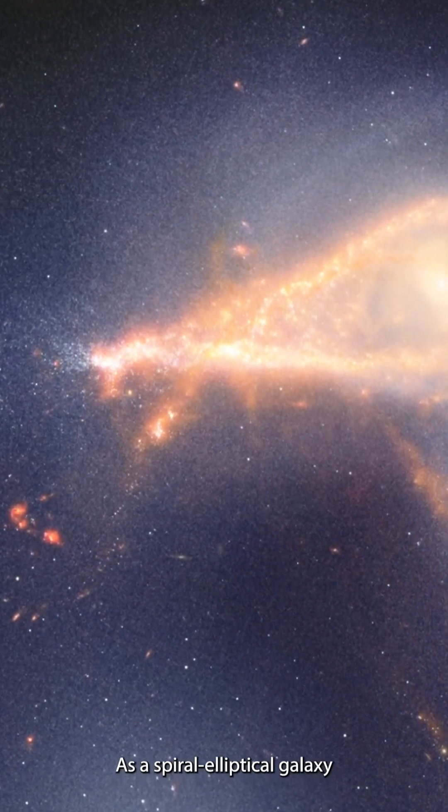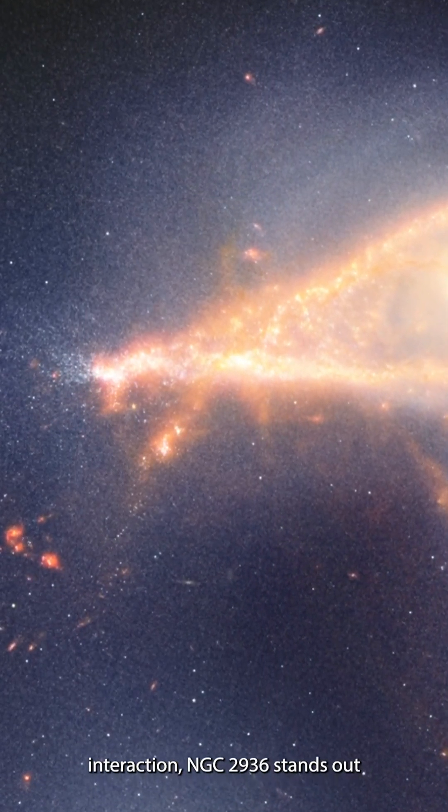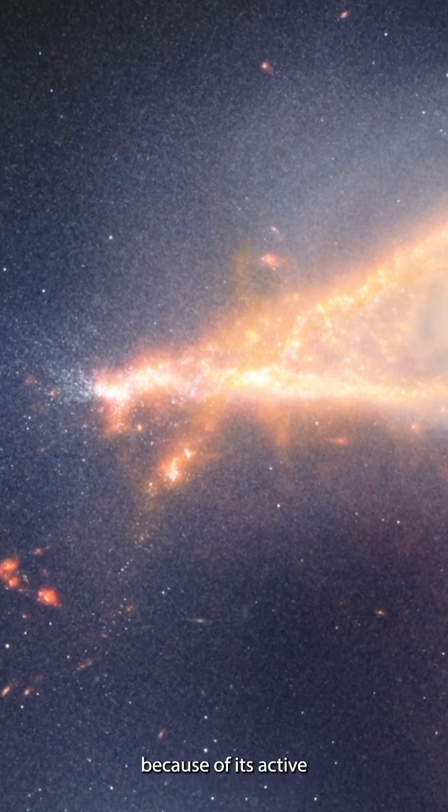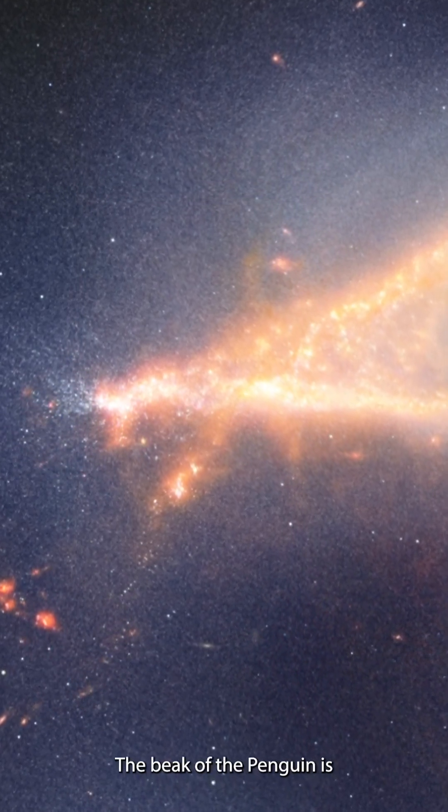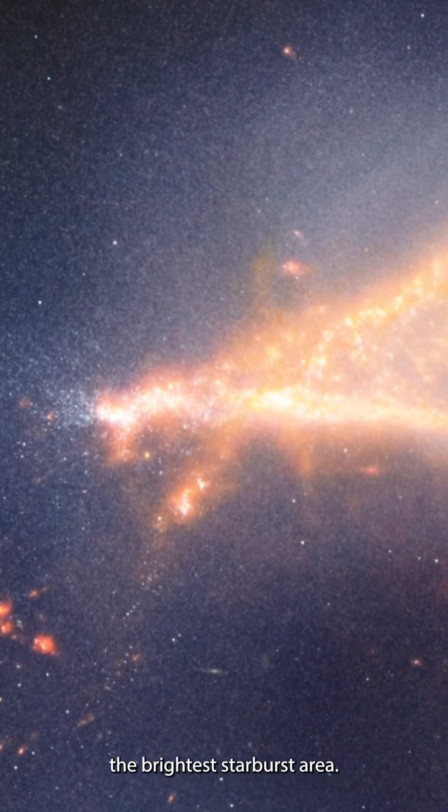As a spiral elliptical galaxy interaction, NGC 2936 stands out because of its active star-forming regions. The beak of the Penguin is the brightest starburst area.